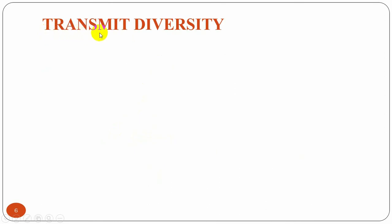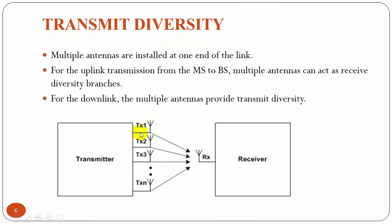Now we are going to discuss about transmit diversity. Here, multiple antennas are installed at the transmitter side for uplink transmission from the mobile station to the base station. Multiple antennas can act as receive diversity branches; for downlink, multiple antennas provide transmit diversity. Next we are going to see the types of transmit diversity.